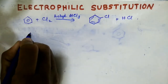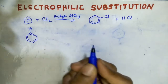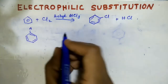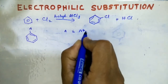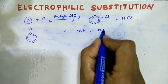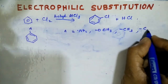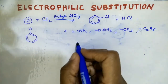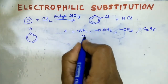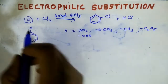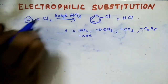Suppose that the A group is an activating group. Examples of activating groups are: NH2, OCH3, CH3, C2H5, NHR, and similar groups. If either of these groups is present in benzene, I will show you what will happen to that benzene ring.